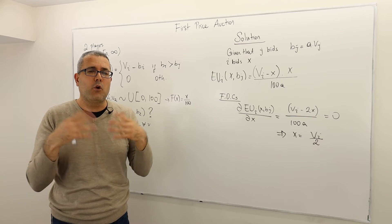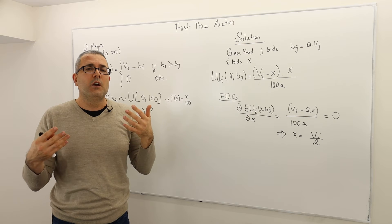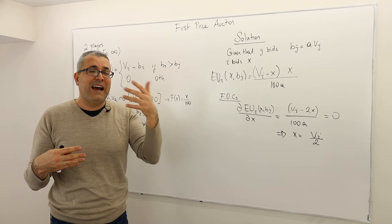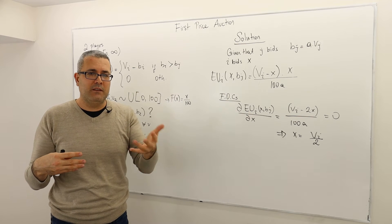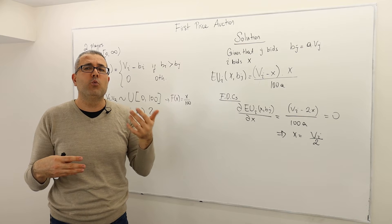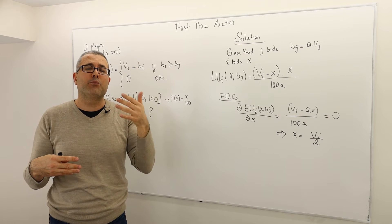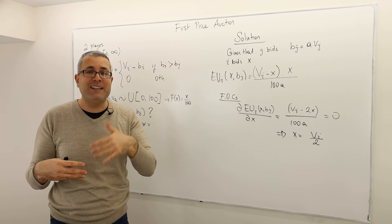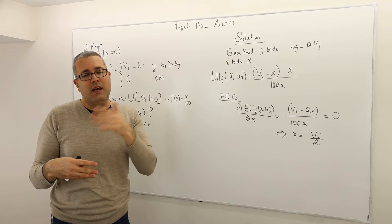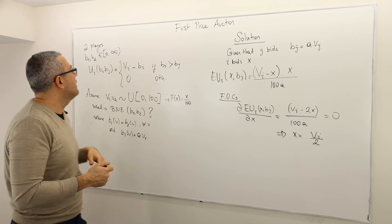Then the auctioneer opens those envelopes and looks at the bids. Whoever had the highest bid, the player who has the highest bid will win the object and pays the price — the bid he made. The other bidder is going to lose the object.